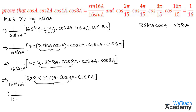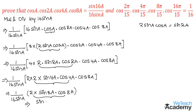By using the formula we get 1/(16 sin a) · 2 · sin 8a · cos 8a, which gives sin(2·8a) = sin 16a. So that gives sin 16a divided by the denominator 16 sin a, which is exactly the RHS. Therefore cos a · cos 2a · cos 4a · cos 8a = sin 16a / (16 sin a). Let us name this equation 1.